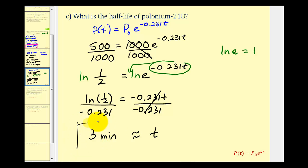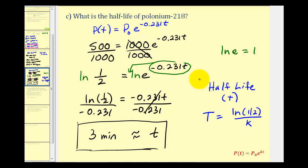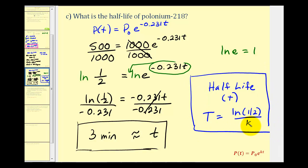Now that we've determined the half-life the long way, there is a shortcut. Whenever we want to find the half-life T for exponential decay, it equals natural log of one-half divided by the exponential decay rate constant k. If you remember, when we had exponential growth the shortcut for doubling time was natural log two divided by k. We'll stop here and take a look at a second example of exponential decay in part two.